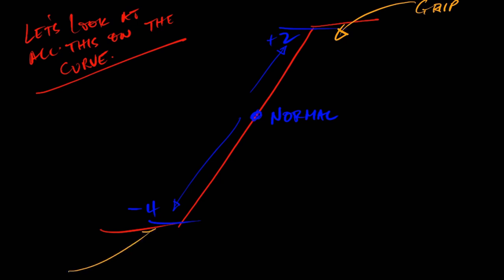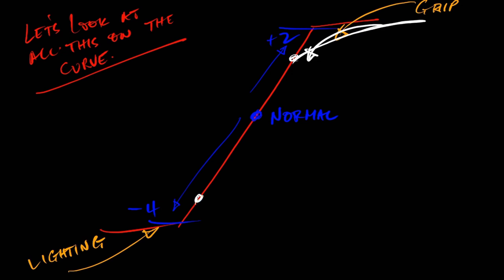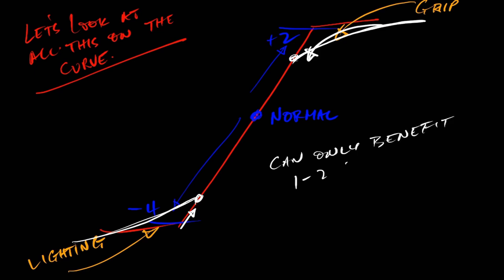If we use the menus, we can change where the knee point is and roll off into the highlights at a different point. We can flatten the highlight gamma to get more highlight detail and hold it a little longer, and do the same in the shadow end. However, no matter what we do, we're not going to be able to expand the curve far enough to get the same impact and control that we'd get from using lighting and grip.